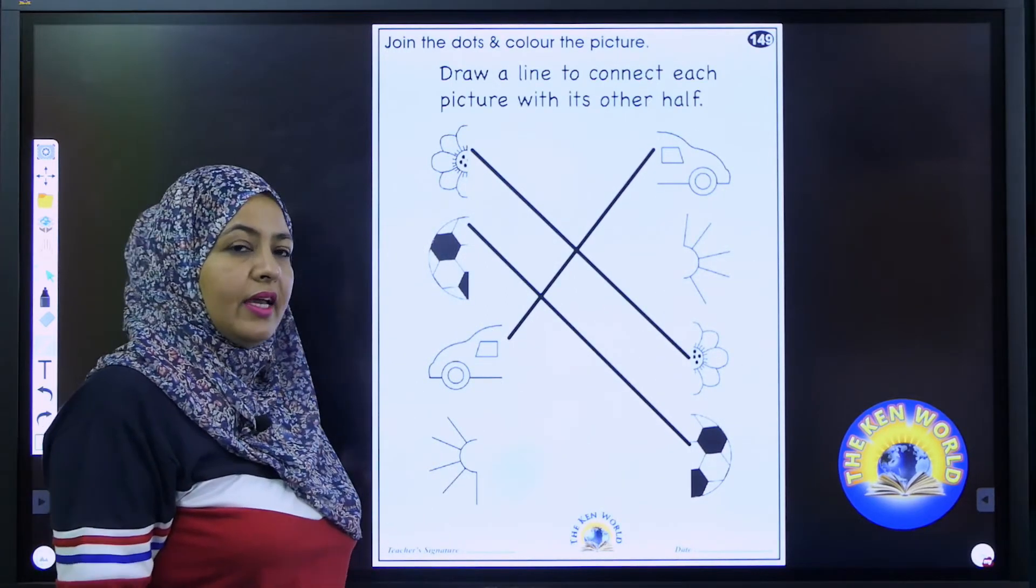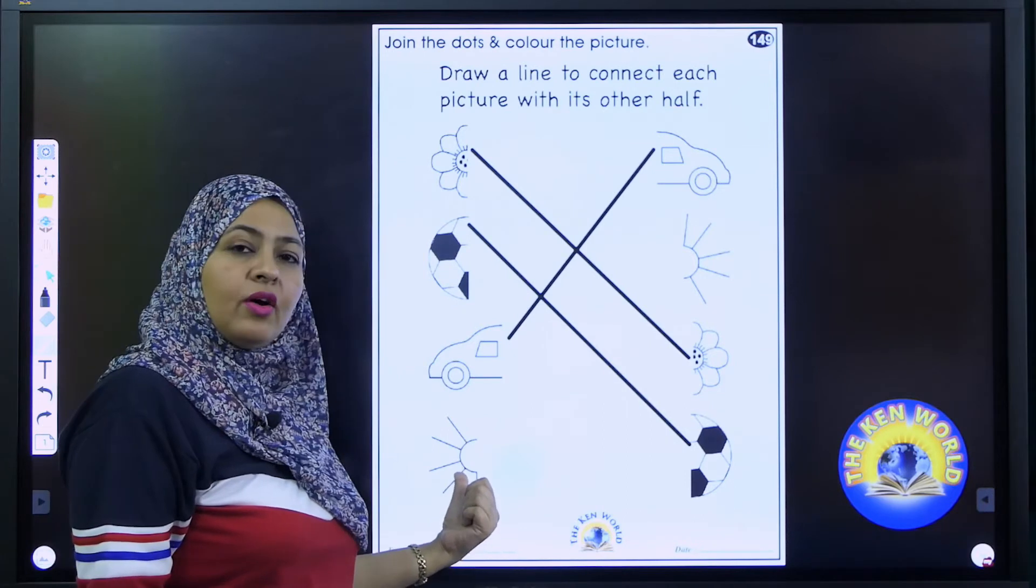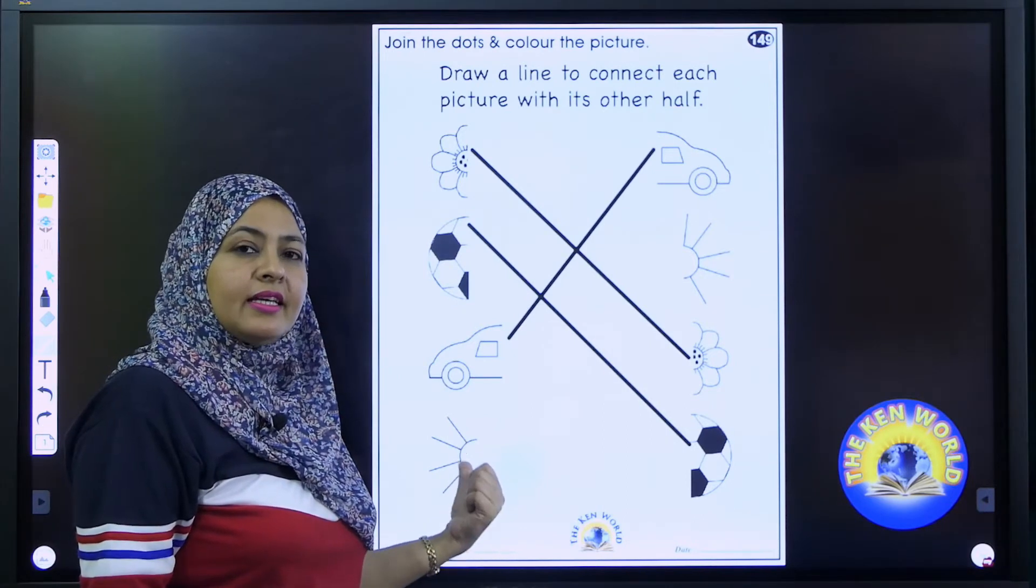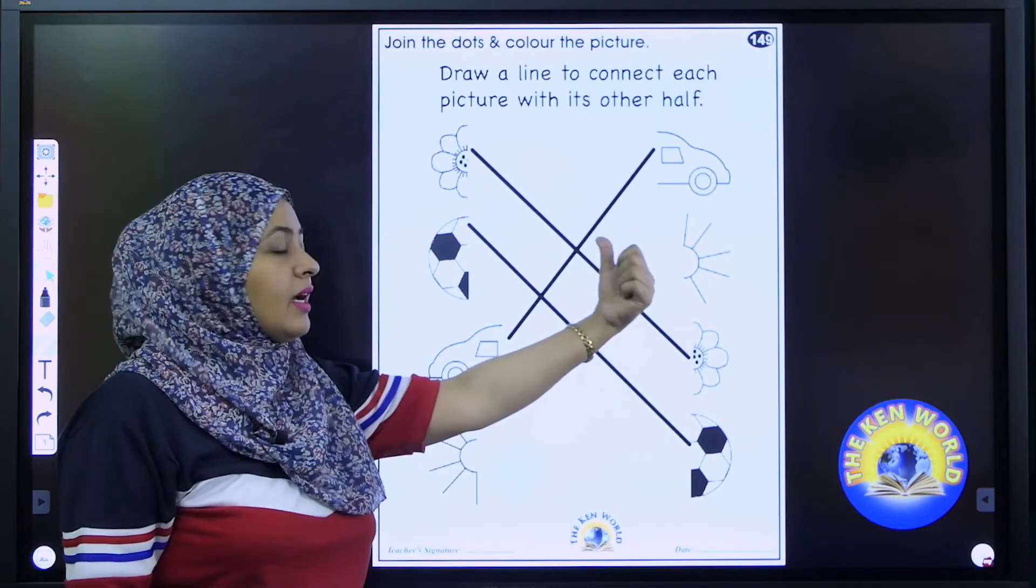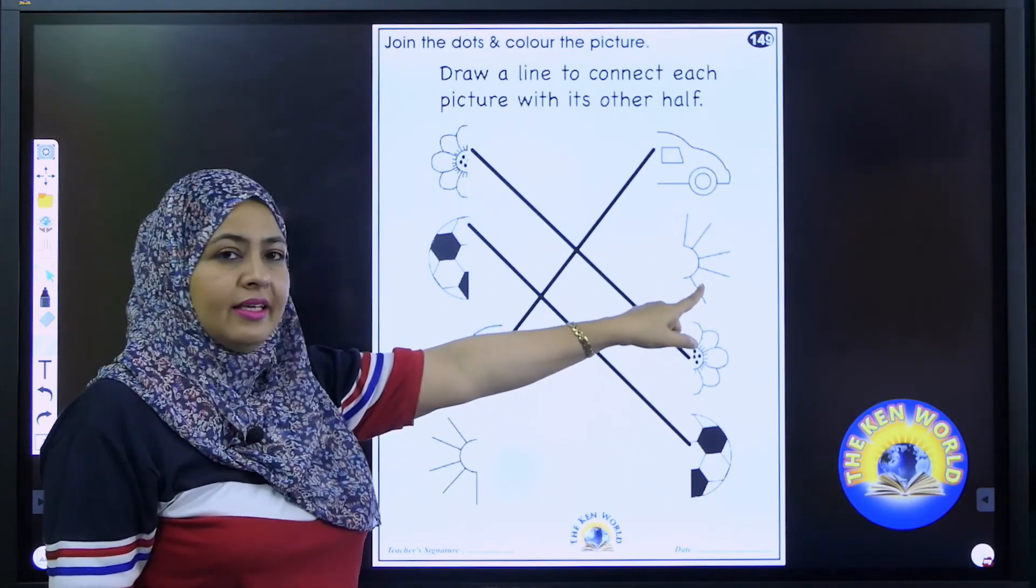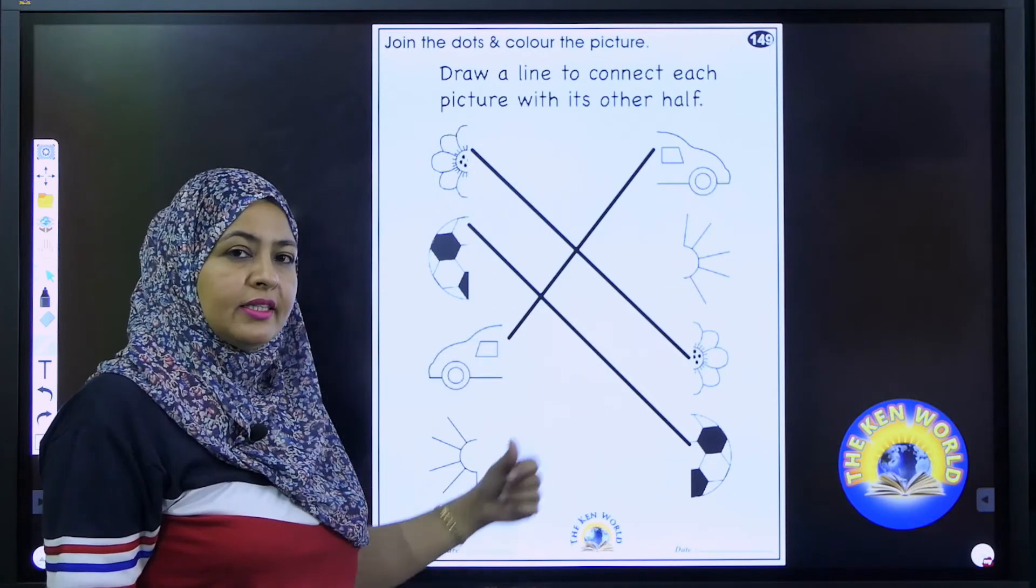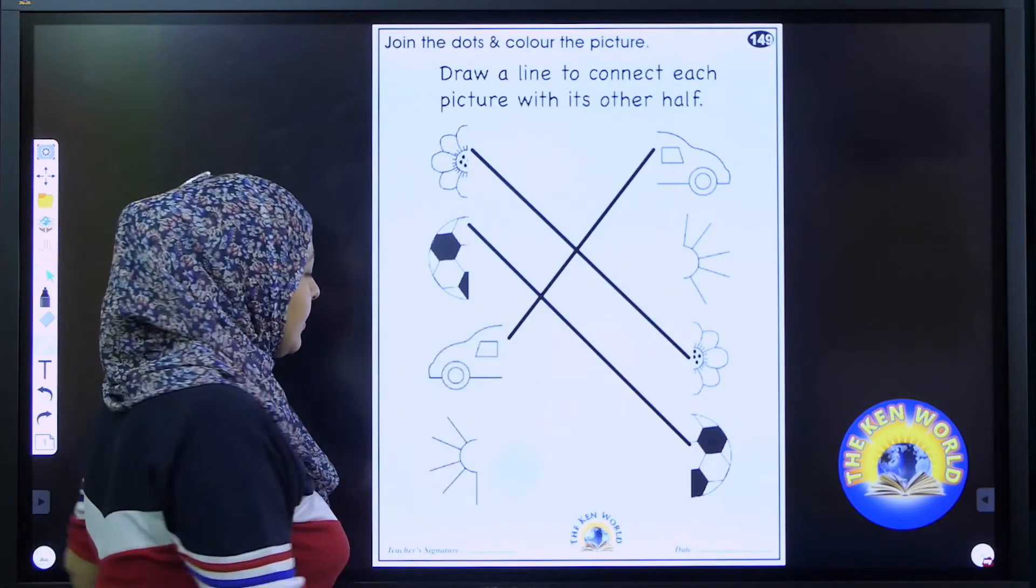Here we have a last picture which is of sun. We have to connect it with its other half. Here you can see. Yes. So connect this part with its another part.